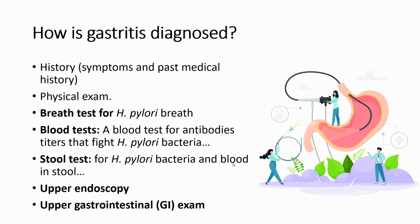How to diagnose gastritis? Diagnosis usually depends on the patient's history, signs and symptoms, and physical examination. If H. pylori is suspected, we can order a breathing test or blood test for antibodies. Stool exam for H. pylori and blood in stool can also be performed. Additionally, upper endoscopy or upper GI examination can be requested.